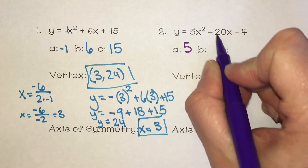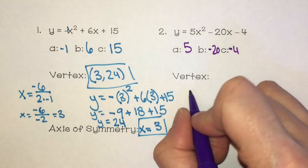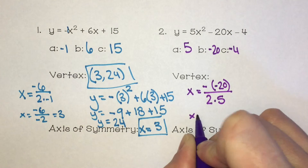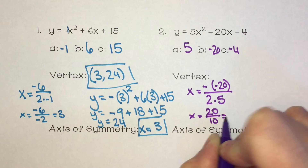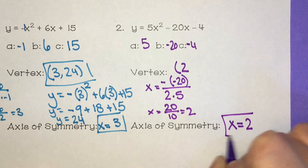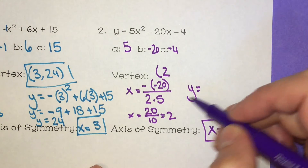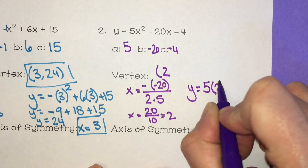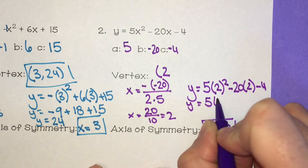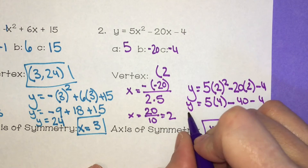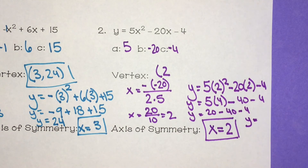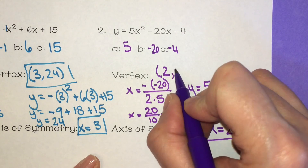For the last problem, a is 5, b is negative 20, and c is negative 4. The x-coordinate: negative b, which is negative 20, over 2 times a, which is 5 — a negative times a negative is a positive, so positive 20 over 10, which is 2. The axis of symmetry is x equals 2. For the y-coordinate, plug in 2 for x: 5 times 2 squared minus 20 times 2 minus 4. Exponents first: 5 times 4 is 20, minus 40, minus 4, which reduces to negative 24. So the vertex is (2, -24).